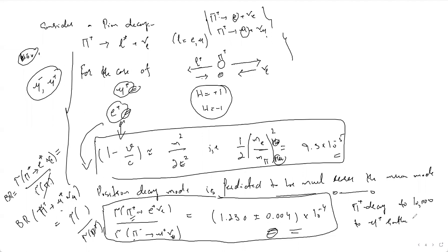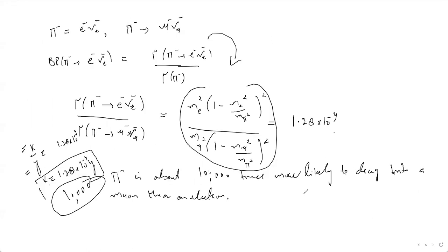The same argument applies to pi-plus: pi-plus will also decay about 10,000 times more likely to mu-plus than to a positron. You can verify this yourself by substituting the mass of the electron (0.511 MeV) and mass of pion (~140 MeV) into the formula to check that the ratio comes out to this value for both pi-plus and pi-minus.